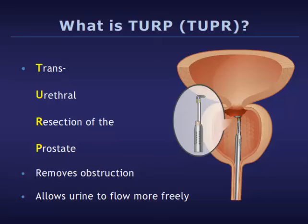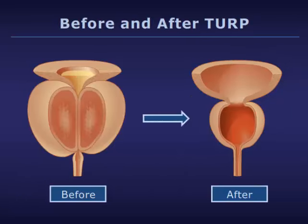Opening up the urine channel allows the bladder to work less hard to empty, which relieves bladder symptoms such as frequent and urgent urination. This slide shows the prostate gland and the urethra before and after surgery. Urine flows more easily once the obstructing prostate tissue has been removed.